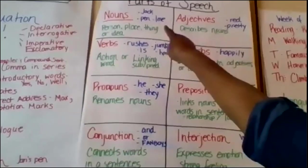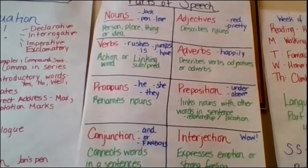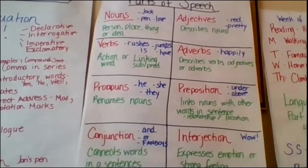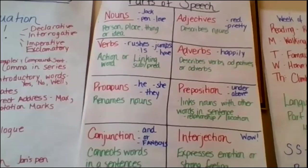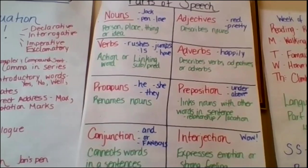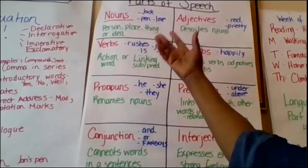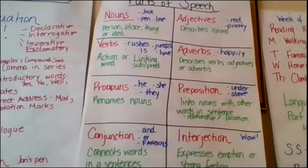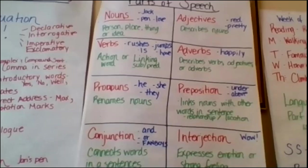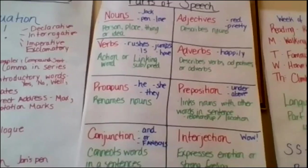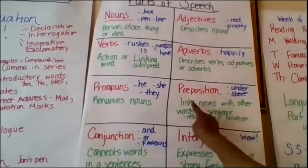When we look at parts of speech, we know there are eight. We have nouns — person, place, thing, or idea. Examples: Jack, pin, love. Adjectives describe nouns — examples: red, pretty. Verbs are action words, but they're also linking because they can connect the subject with the predicate. Action words: rushes, jumps. Linking verb example: has. Adverbs describe verbs, adjectives, or other adverbs — and they usually end in -ly. Example: happily.